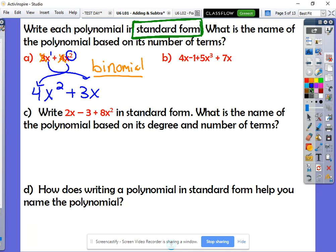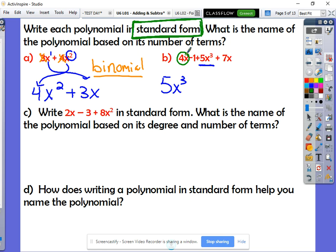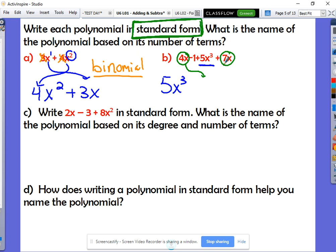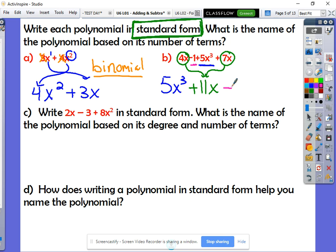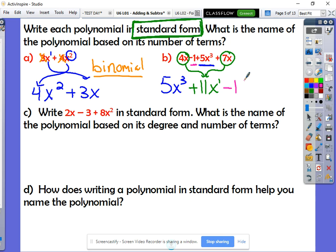The first term should have been five X cubed. That's our largest exponent. Five X cubed. Our next term is actually going to be this one and this one together. Those are like terms. So we can bring them together. Four X plus seven X gives me positive 11 X. And then our last term is going to be the negative one. There's our polynomial in standard form. The biggest exponent was three. The next biggest was an invisible one. And then the constant term always comes at the end.